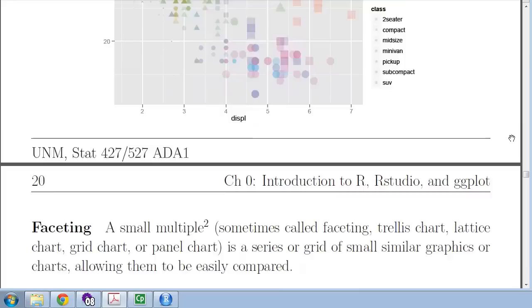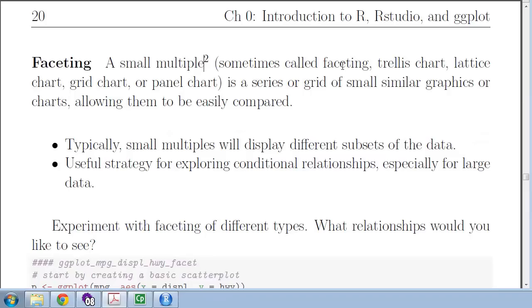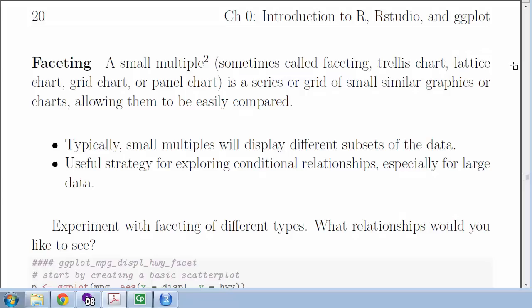Faceting — what Edward Tufte calls small multiples — also has several other names: trellis chart, lattice chart, grid chart, panel chart. The three main names are small multiples (most common in the literature), faceting (the word used in the grammar of graphics), and lattice (the word used in the lattice package). Let me show you examples of this, then we'll go back and look at the code.